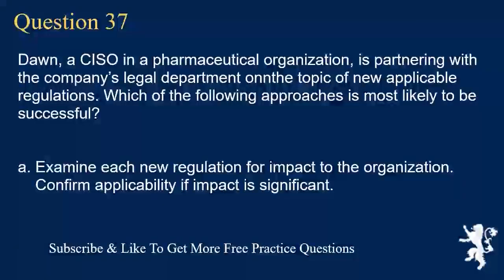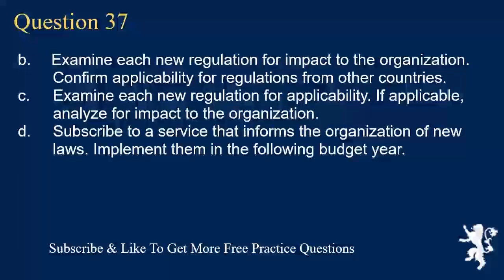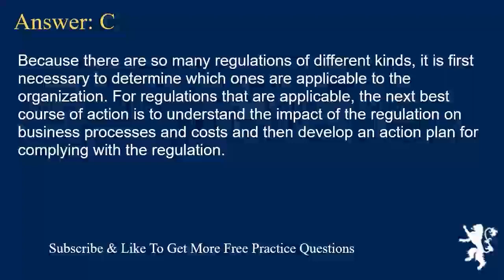Question 37. Don, a CISO in a pharmaceutical organization, is partnering with the company's legal department on the topic of new applicable regulations. Which of the following approaches is most likely to be successful? A. Examine each new regulation for impact to the organization; confirm applicability if impact is significant. B. Examine each new regulation for impact to the organization; confirm applicability for regulations from other countries. C. Examine each new regulation for applicability; if applicable, analyze for impact to the organization. D. Subscribe to a service that informs the organization of new laws; implement them in the following budget year. Answer C. Because there are so many regulations of different kinds, it is first necessary to determine which ones are applicable to the organization. For applicable regulations, the next best course of action is to understand the impact on business processes and costs, and then develop an action plan for complying with the regulation.